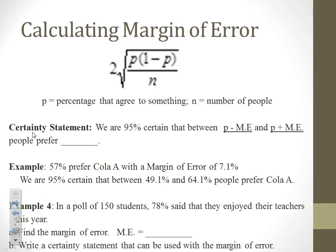Sometimes you will have to calculate the margin of error. They'll give you the formula, but to be safe, memorize it: 2 times the square root of p times (1 minus p) over n. Here, p is the percentage as a decimal and n is the number of people surveyed.